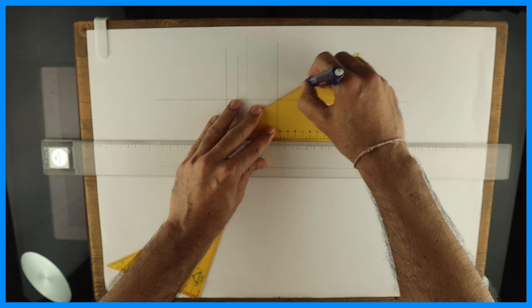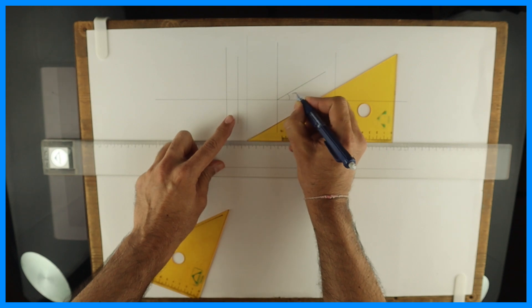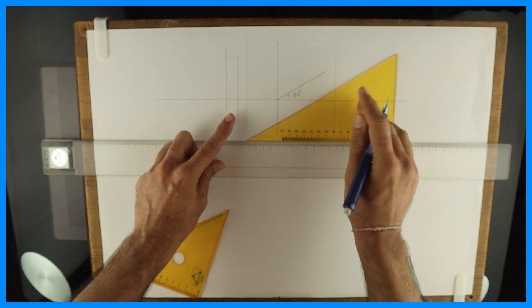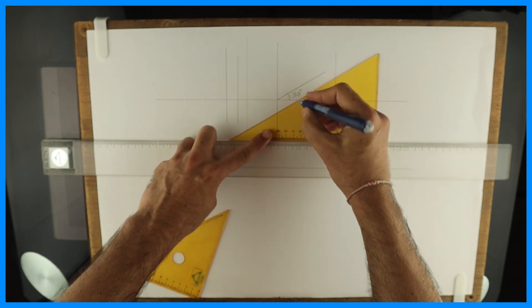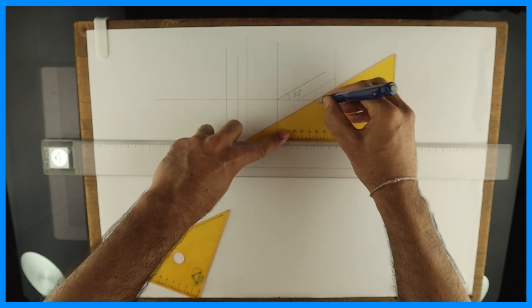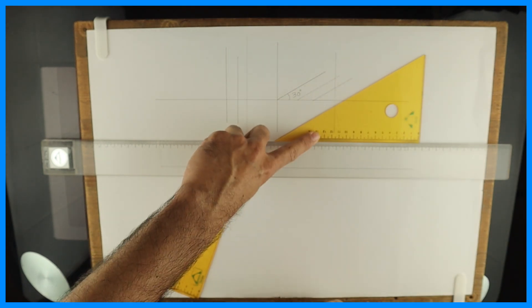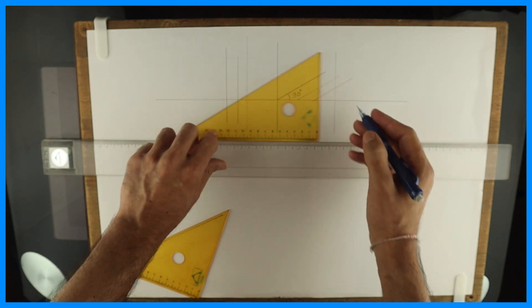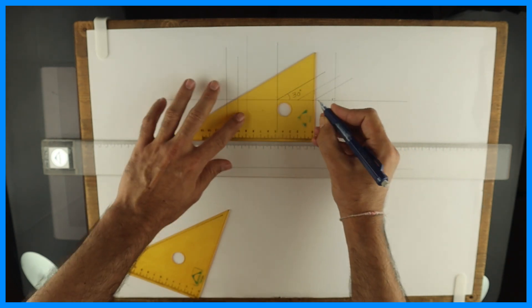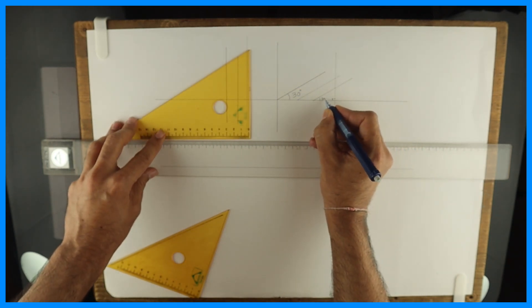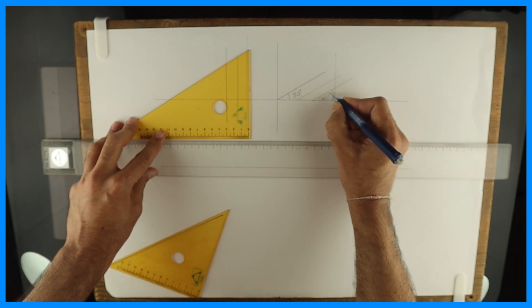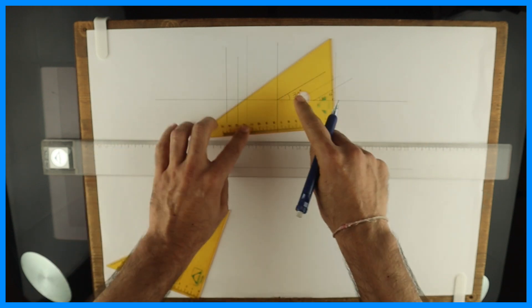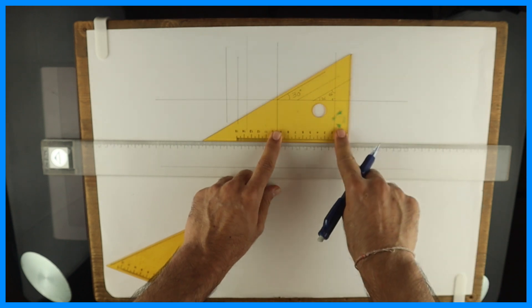Now if you see this, this is which angle? 30 degree. This is 30. See this, 30. We can draw 30 degree parallel lines with this. This is 90, this is 30, this is 60. So this is called 30-60 set square. That's why it's called 30-60 set square.